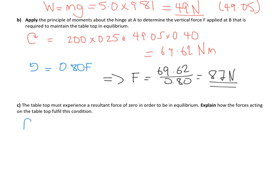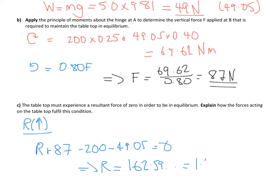So if we resolve upwards, looking at forces with upward components, we've got that R plus 87, which are the two upward forces, minus 200 minus 49.05 is equal to 0. And when we solve that, we find, to keep it in equilibrium, R will have the value of 162 Newtons, which we would give to two significant figures, it's 1.6 times 10 to the 2 Newtons.